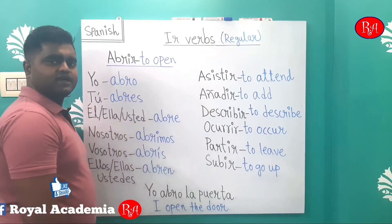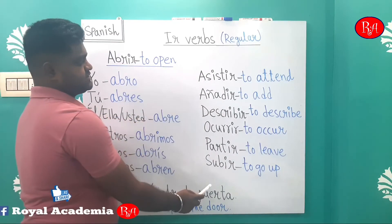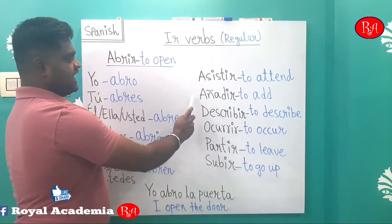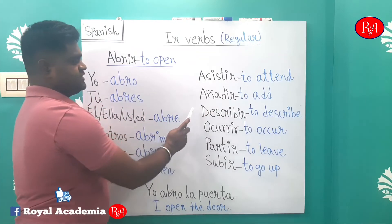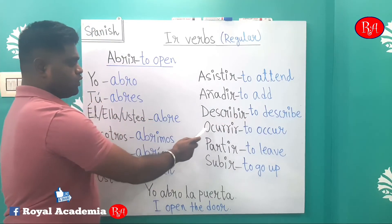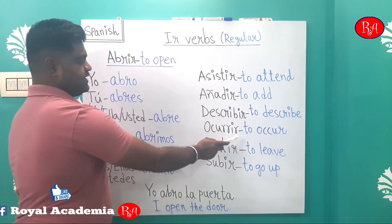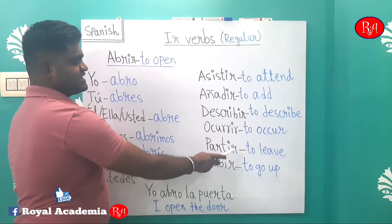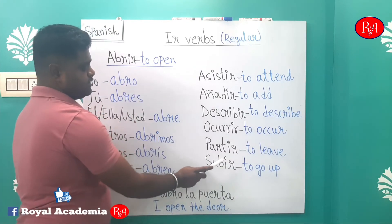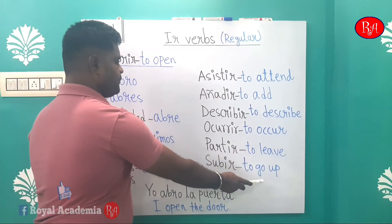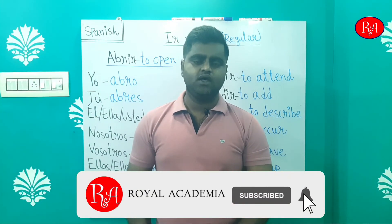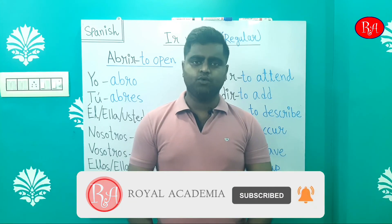Now, for other -IR verbs, I have written six examples: asistir (to attend), añadir (to add), describir (to describe), ocurrir (to occur), partir (to live), and subir (to go up). Okay, so that's all for today's video. I hope you understood. Please practice. Thanks for watching. Adiós!